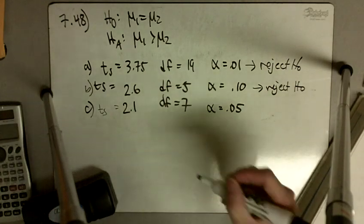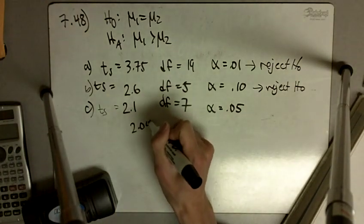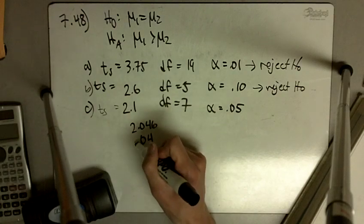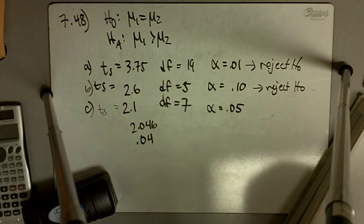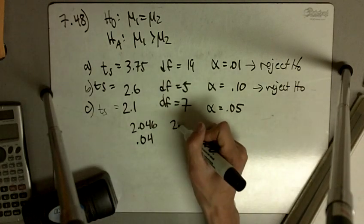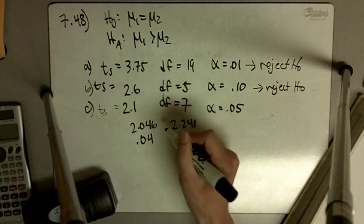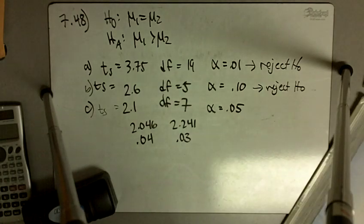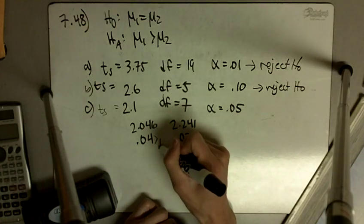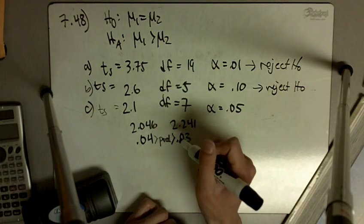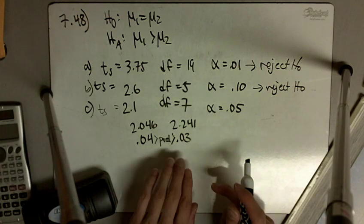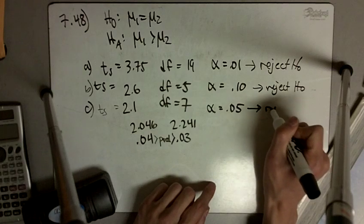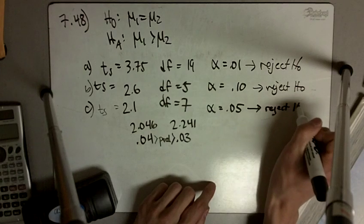2.1 lies in between 2.046, which corresponds to an upper tail probability of 4%, and 2.241. So 2.1 is in between these two numbers, and this is an upper tail probability of 3%. So here our p-value is in between 0.04 and 0.03, so our p-value is less than 0.05, which means we reject our null hypothesis.